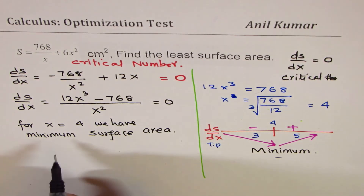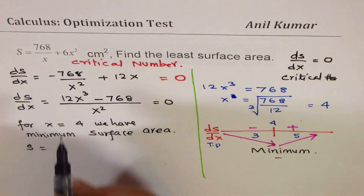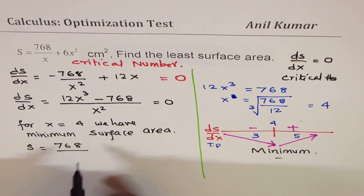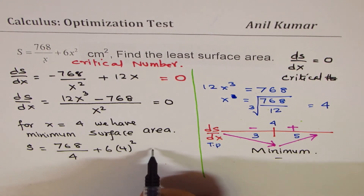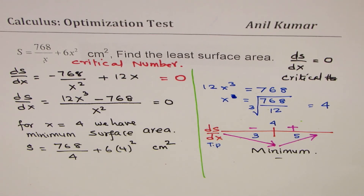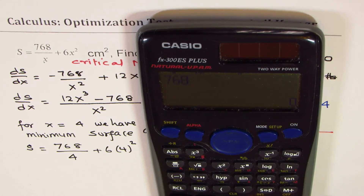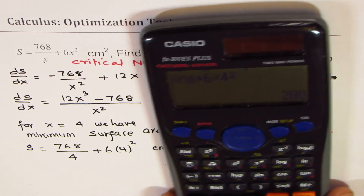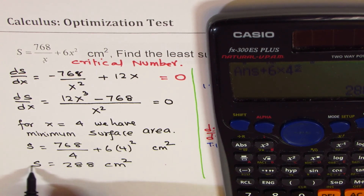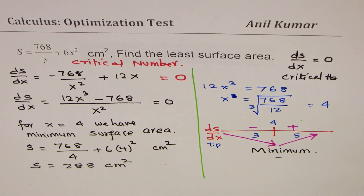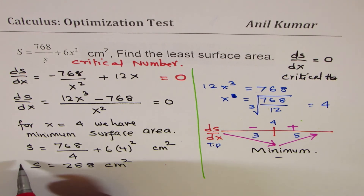Now we find the least surface area by substituting x = 4 into S = 768/x + 6x². We get 768/4 + 6 × 16 = 192 + 96 = 288. So the least surface area is 288 cm² for this particular rectangular box.